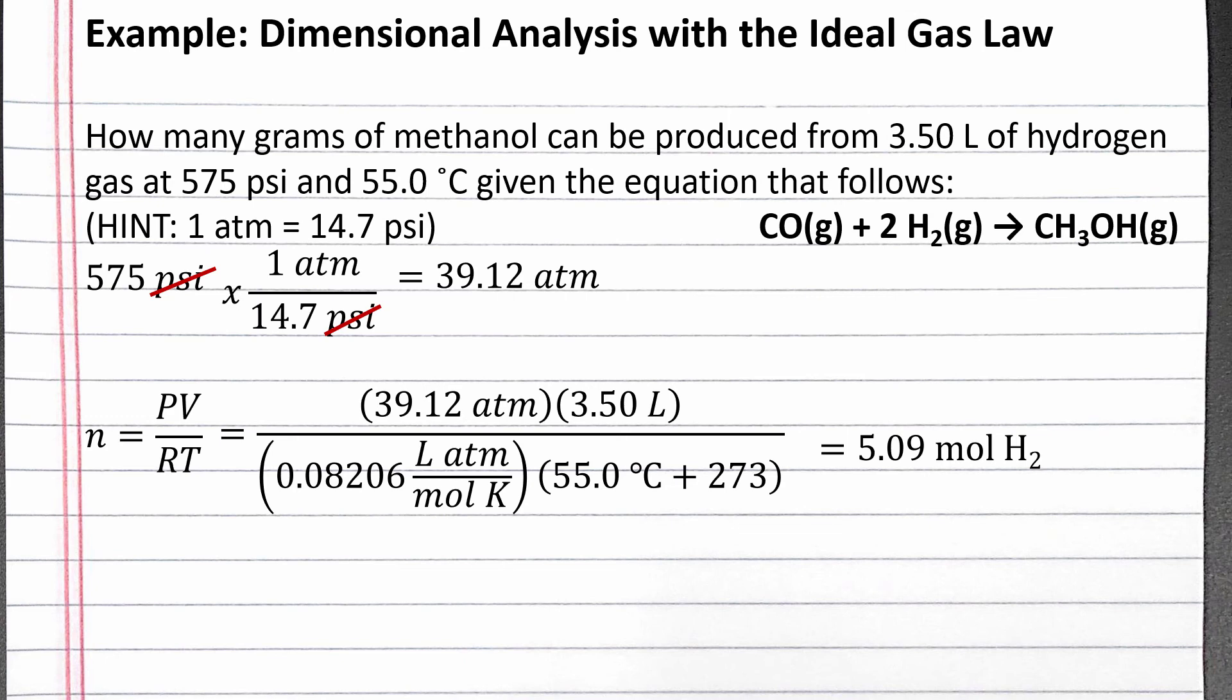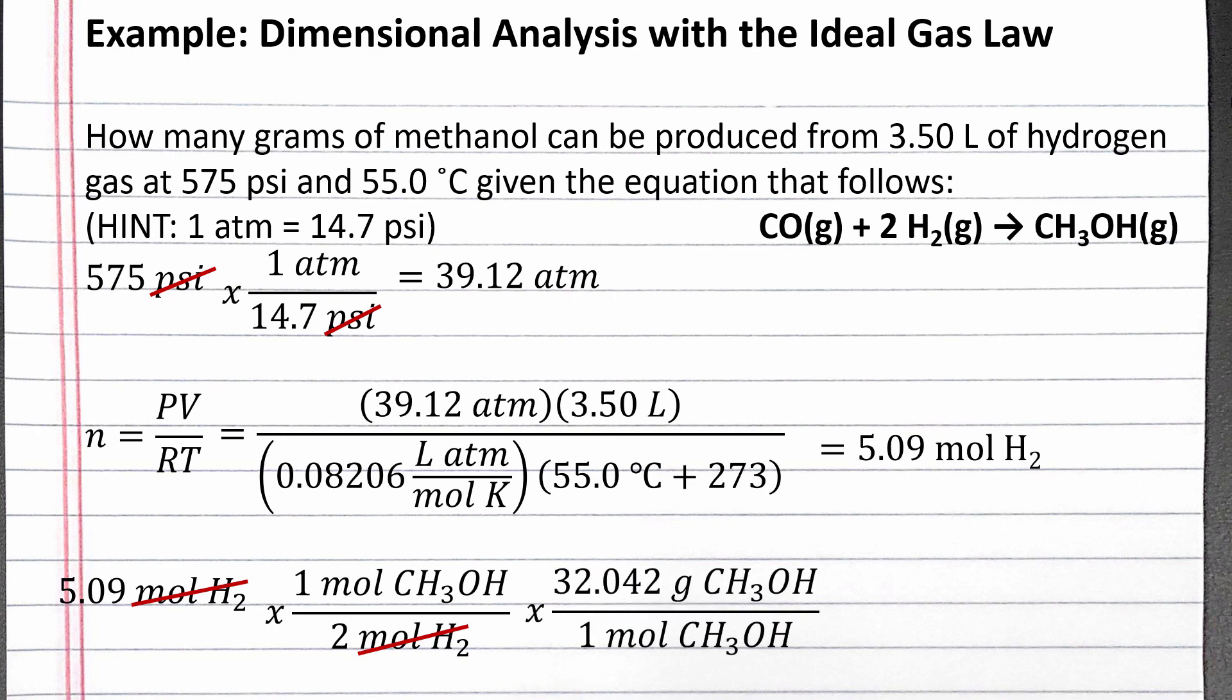Now we can use dimensional analysis to convert moles of hydrogen gas to moles of methanol using the coefficients in the balanced chemical equation. Then we use the molar mass of methanol to convert from moles to grams of methanol.